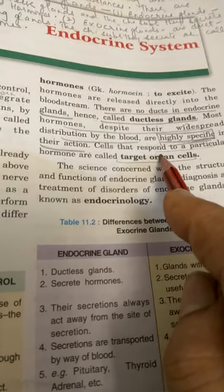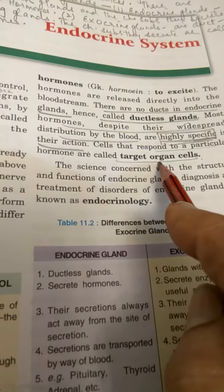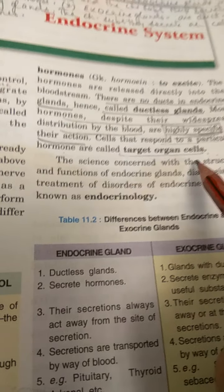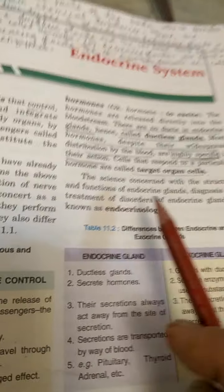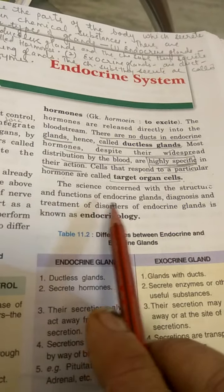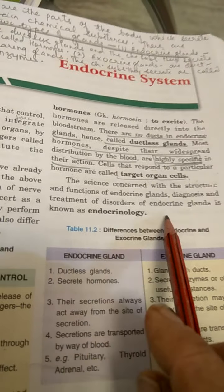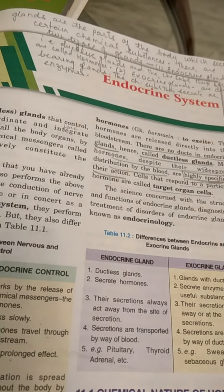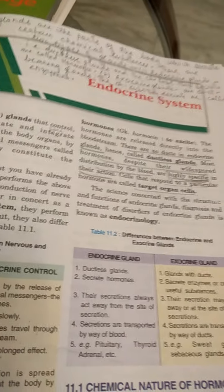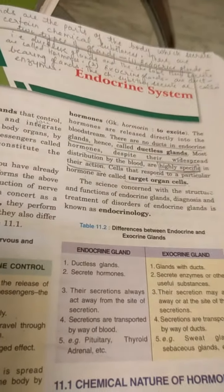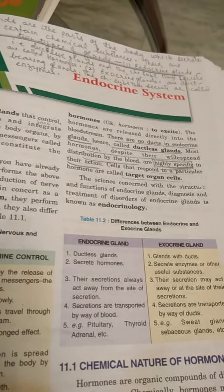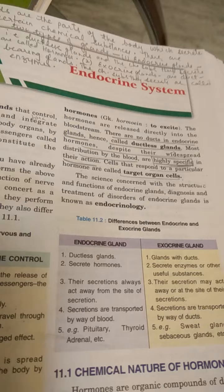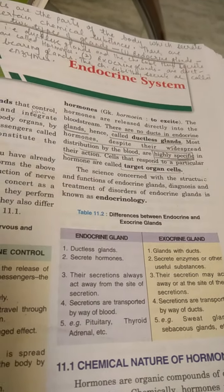Cells that respond to a particular hormone are called target cells or target organ cells. The target organs or cells are those which react to the concerned hormone. The science concerned with the structure and function of endocrine glands, their diagnosis, treatment, and disorders is known as endocrinology. Doctors specializing in this branch of science are called endocrinologists.